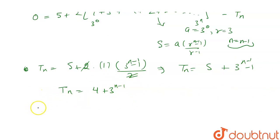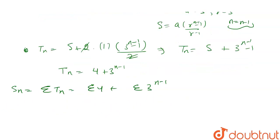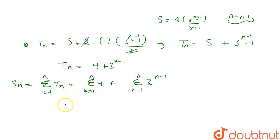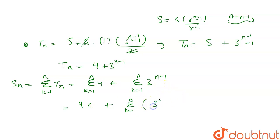This is the nth term. Now we will find the summation: summation of Tn is equal to summation of 4 plus summation of 3 to the power N minus 1, where K is equal to 1 to N. The sum of 4 over N terms gives 4N. Putting K equal to 1, we get 3 to the power 0 plus 3 to the power 1 plus 3 to the power 2 till 3 to the power N minus 1.